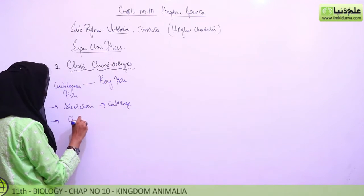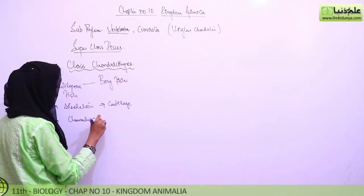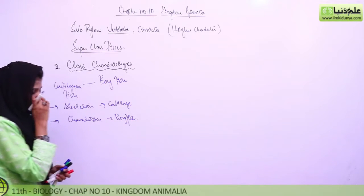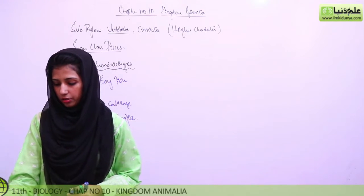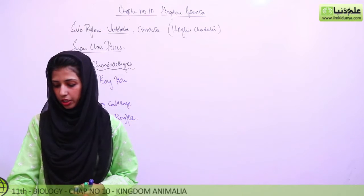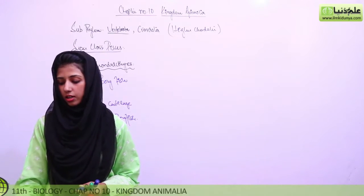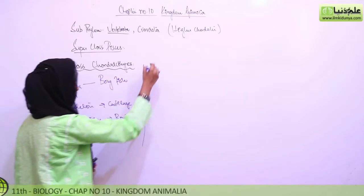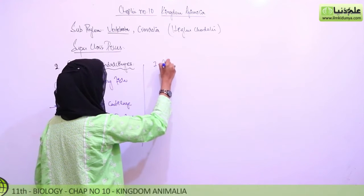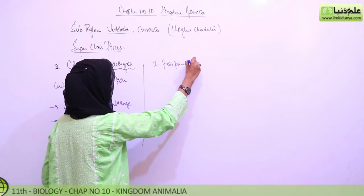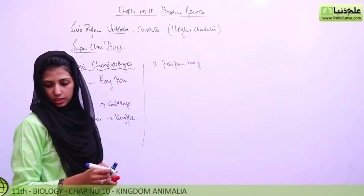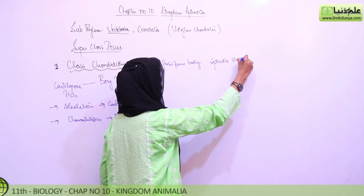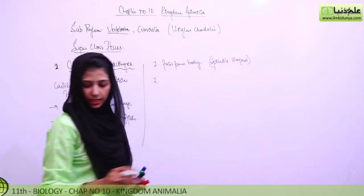The structural characteristics of Chondrichthyes resemble those of bony fish. Going towards the characteristics: first is the fusiform body. Fusiform means spindle-shaped.